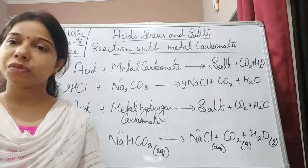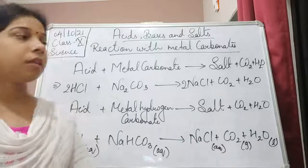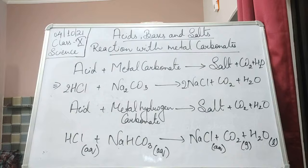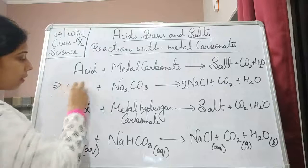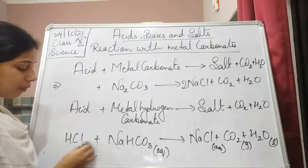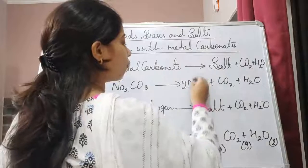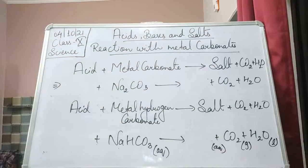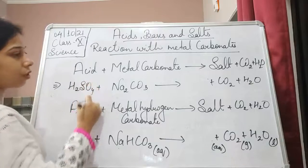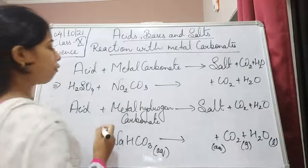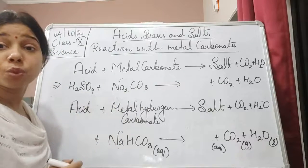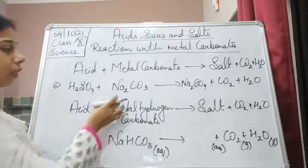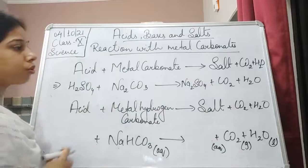In both cases, whether acid reacts with metal carbonate or metal hydrogen carbonate, there is formation of a salt, carbon dioxide, and water. For example, if instead of hydrochloric acid we take sulfuric acid reacting with Na2CO3, then there is formation of sodium sulfate (Na2SO4) plus CO2 plus H2O. Sodium is balanced, sulfate is balanced, carbon is balanced, and oxygen — it is already balanced.